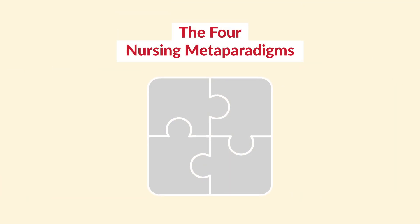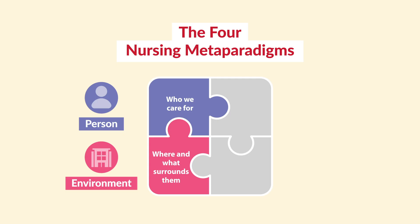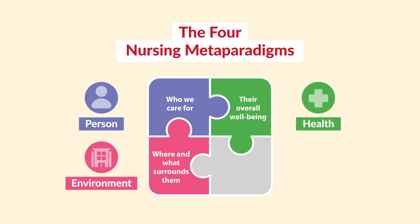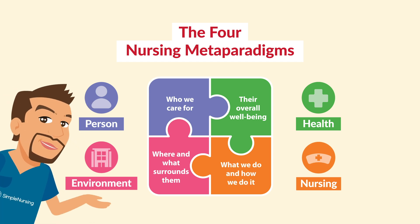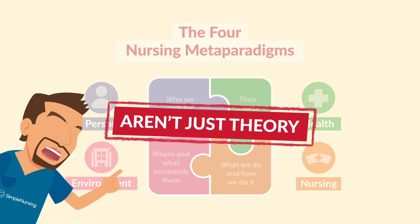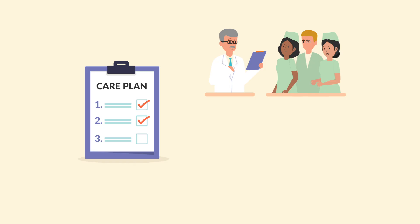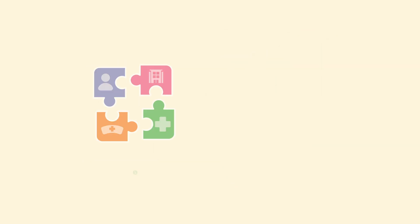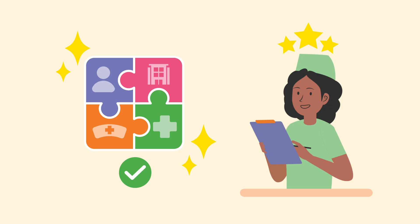So to wrap it up: person is who we care for, environment is where and what surrounds them, health is their overall well-being, and nursing is what we do and how we do it. Here's the secret — these four paradigms aren't just theory. They show up every time you make a care plan, prioritize interventions, or even answer NCLEX questions. The better you understand how they're connected, the easier it is to think like a nurse.